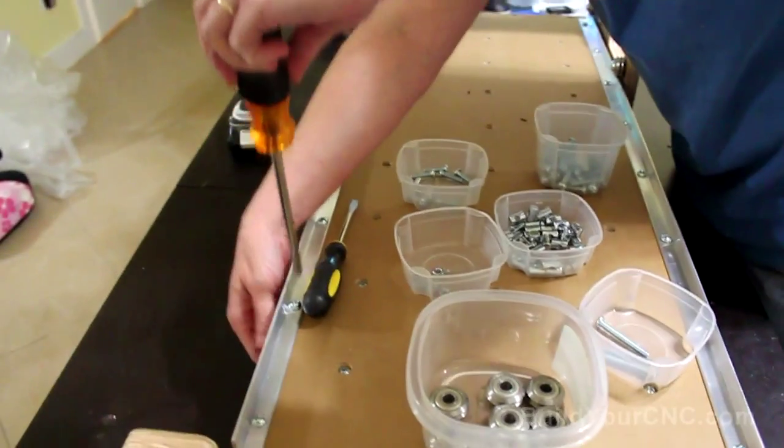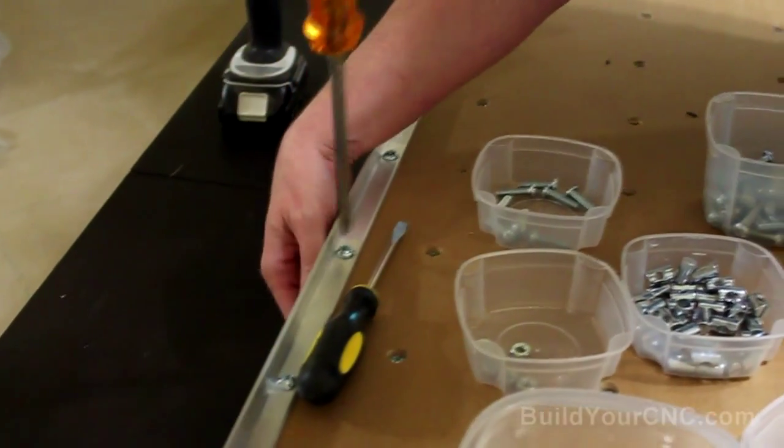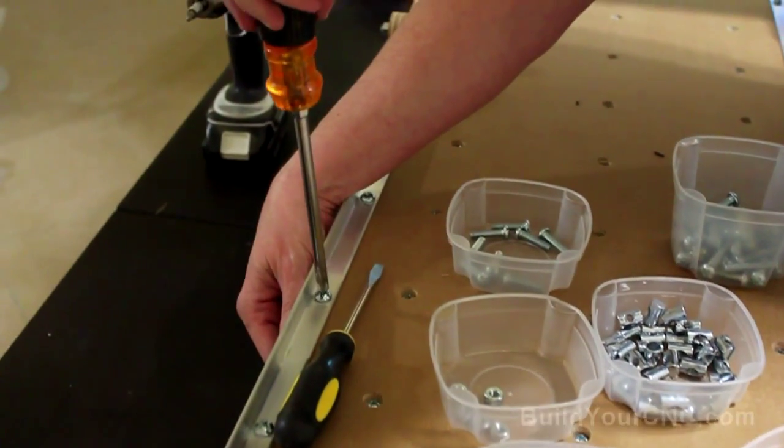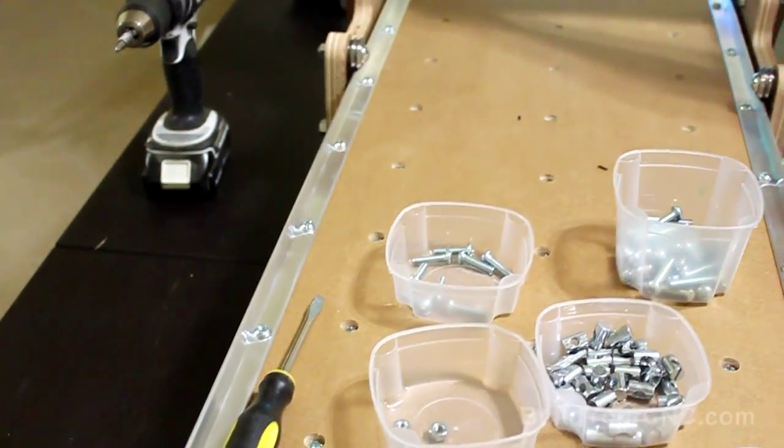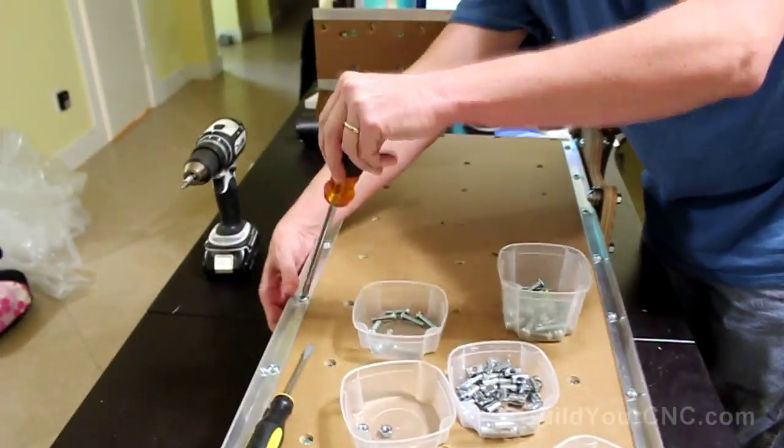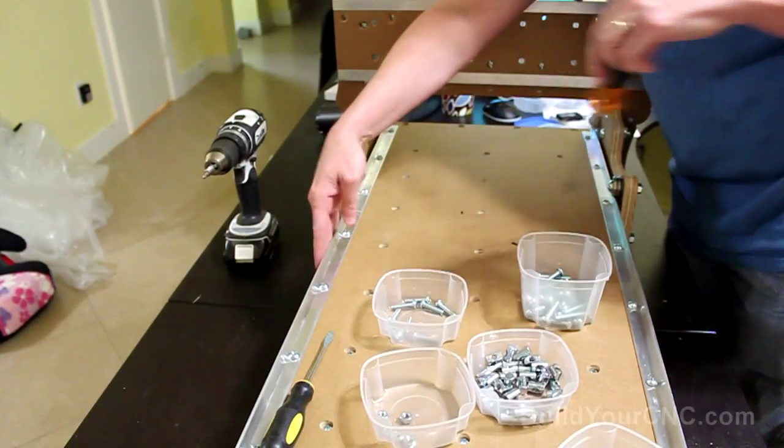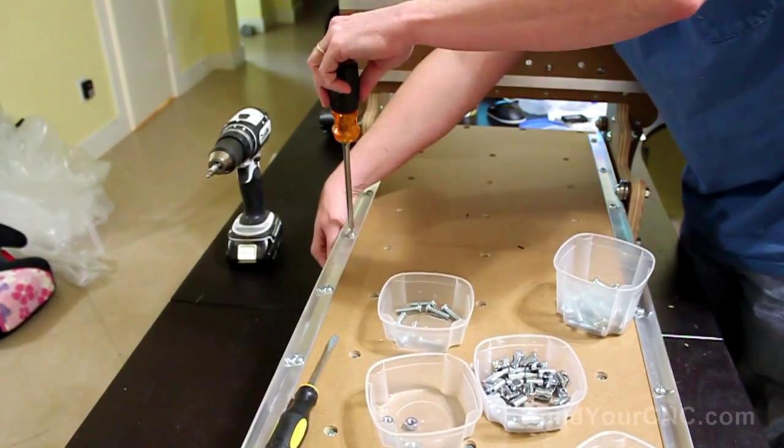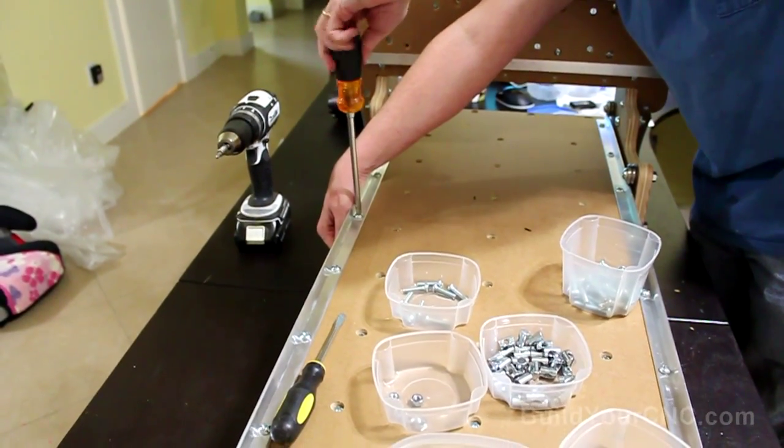This doesn't really have anything to do with squaring the table. Because squaring the table is a matter of rotating the gantry. But we do want these rails to be parallel to each other. And we're going to use the gantry to be able to do this.